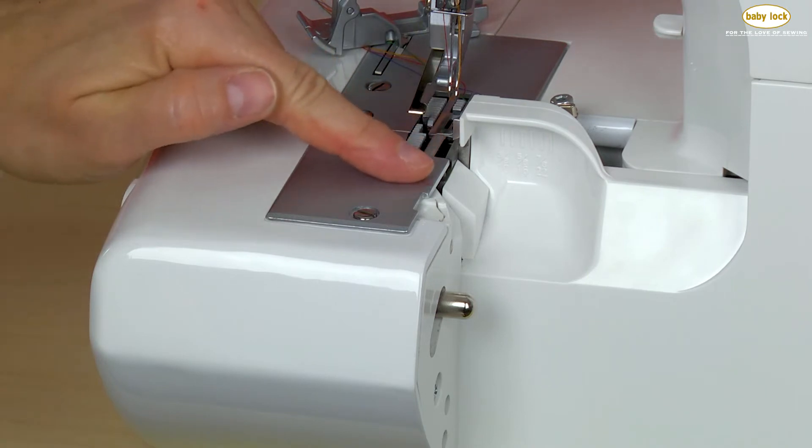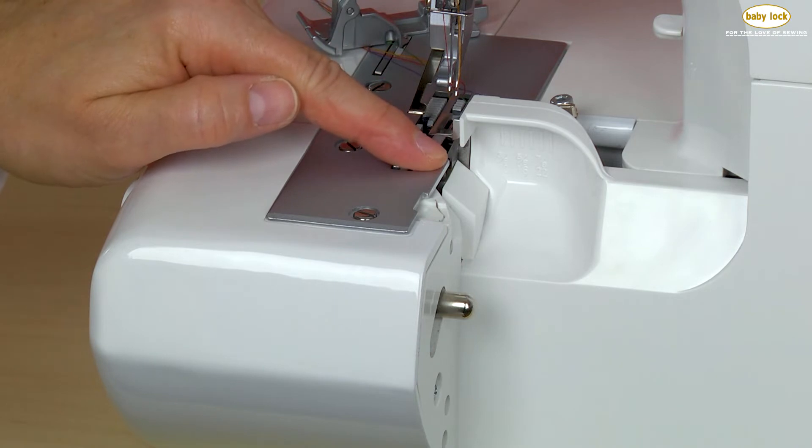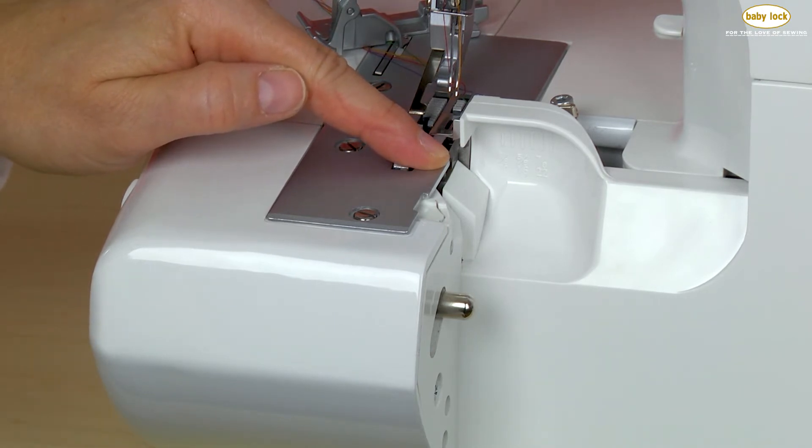What this does is allow fabric to lay flat so it doesn't tunnel. You'll use this adjustment oftentimes depending on your stitch—whether you're using a wide or narrow stitch—and sometimes depending on your fabric.